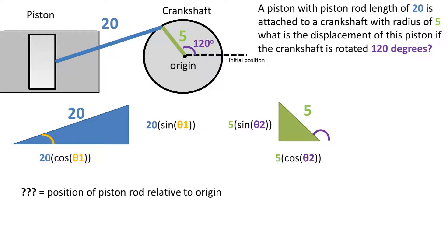So now, how would we set up the equation to find the position of the piston relative to the origin? Well, we can add our two x distances, which will be the adjacent lengths, or cosine lengths, of the two triangles.